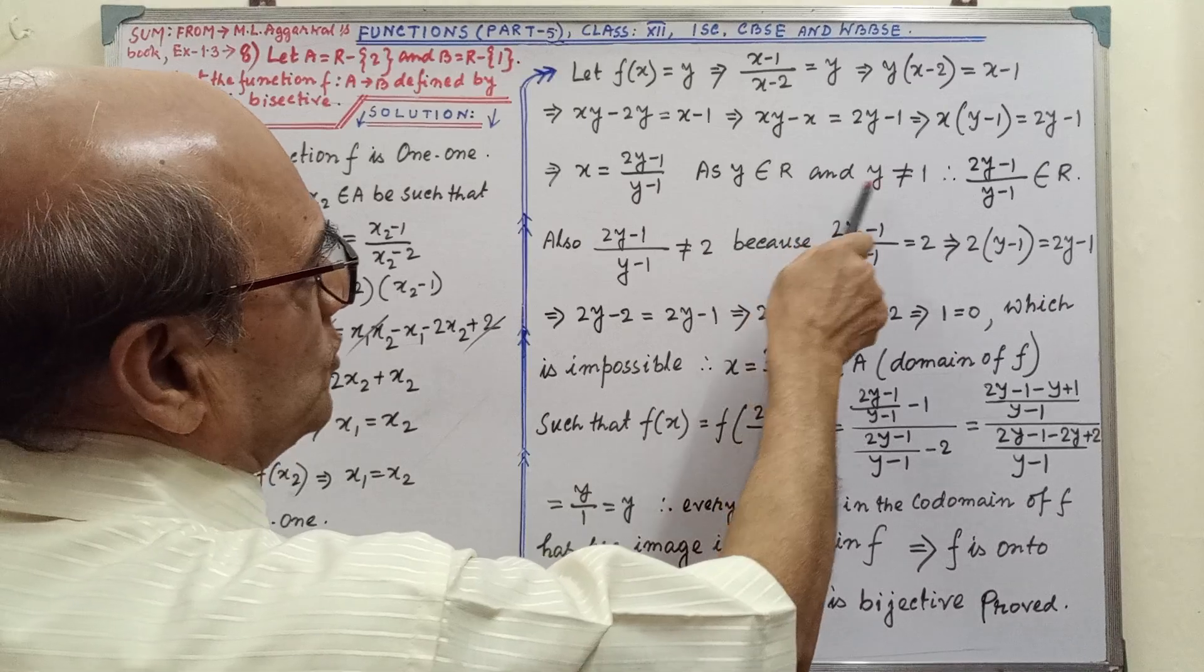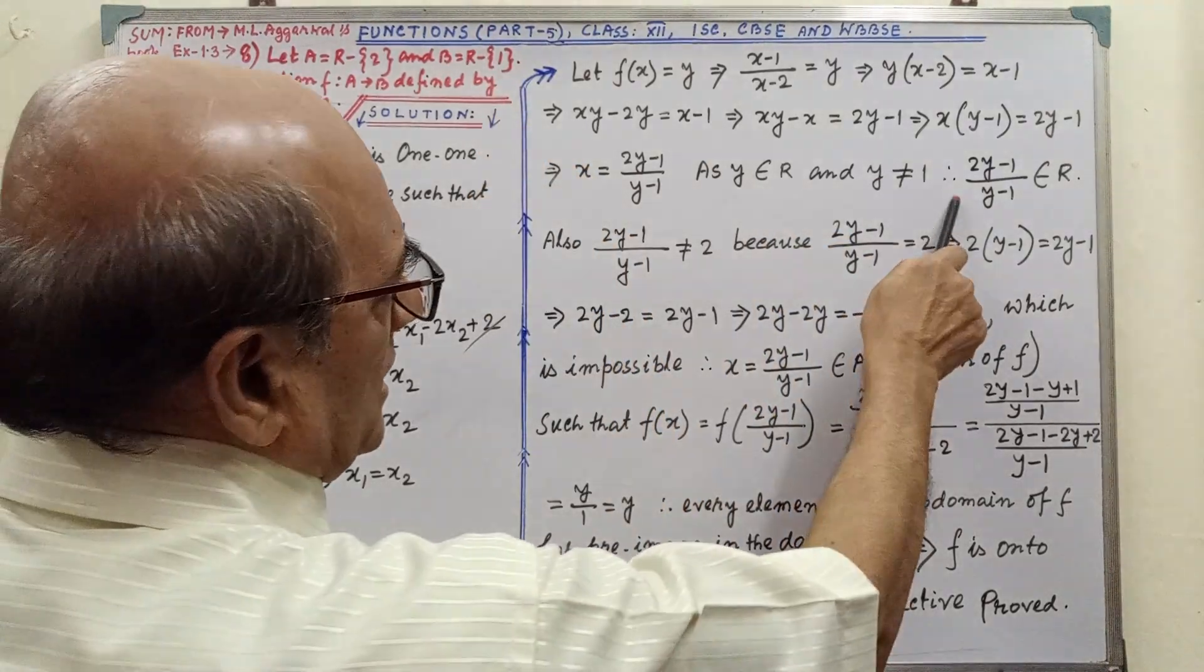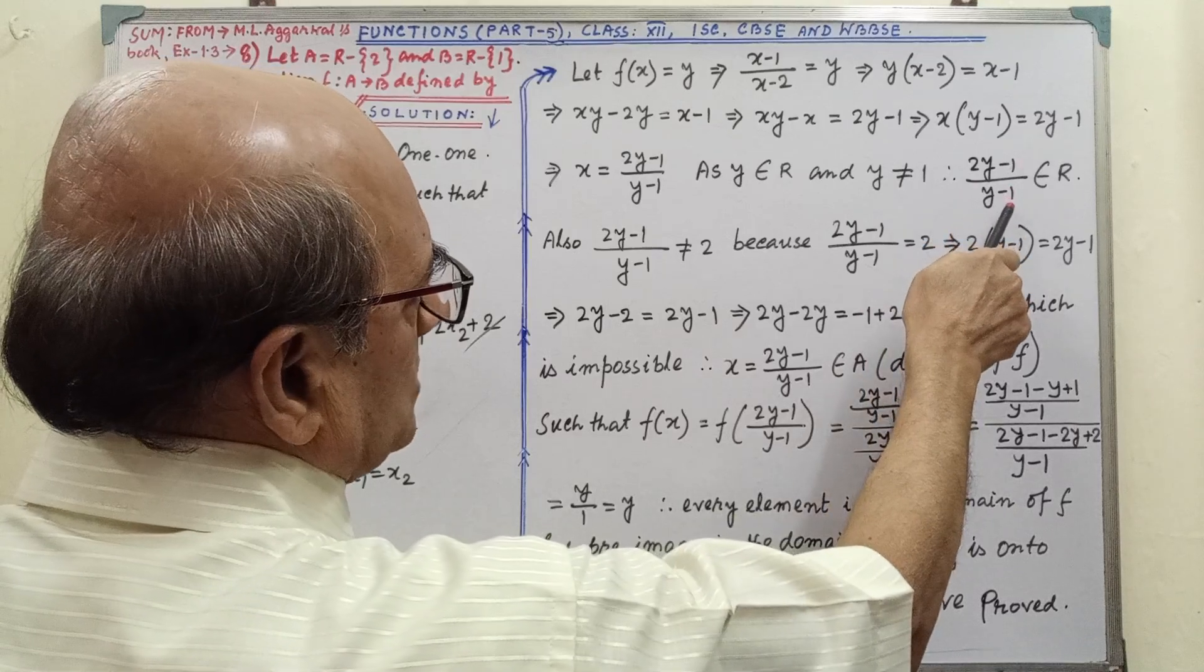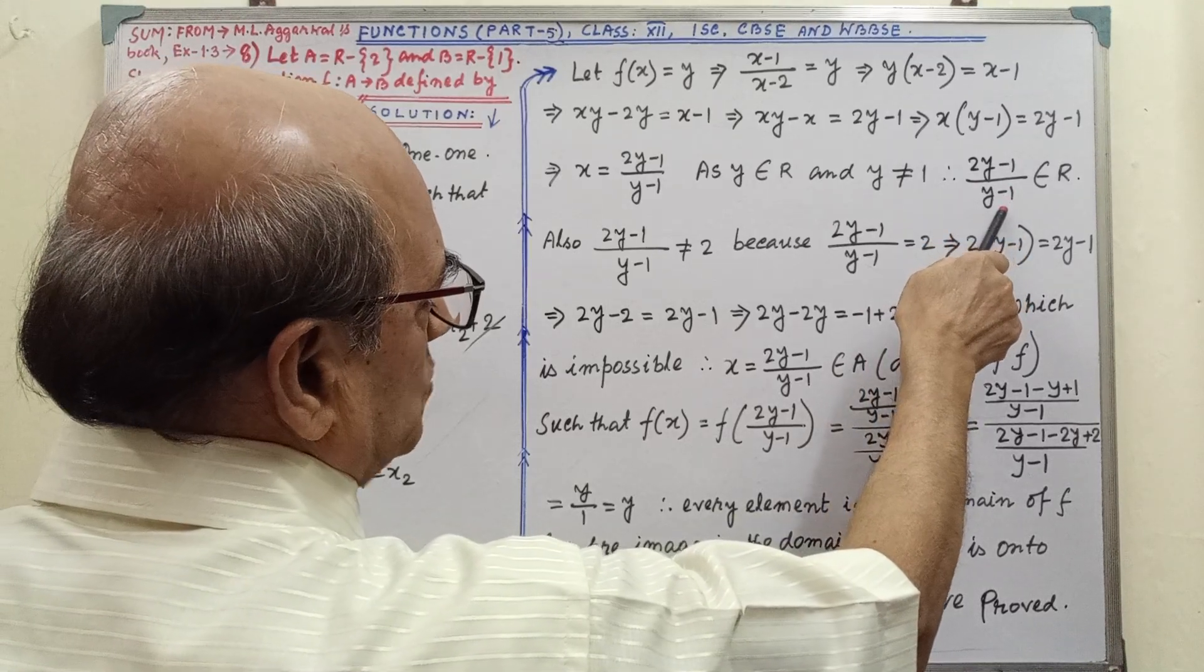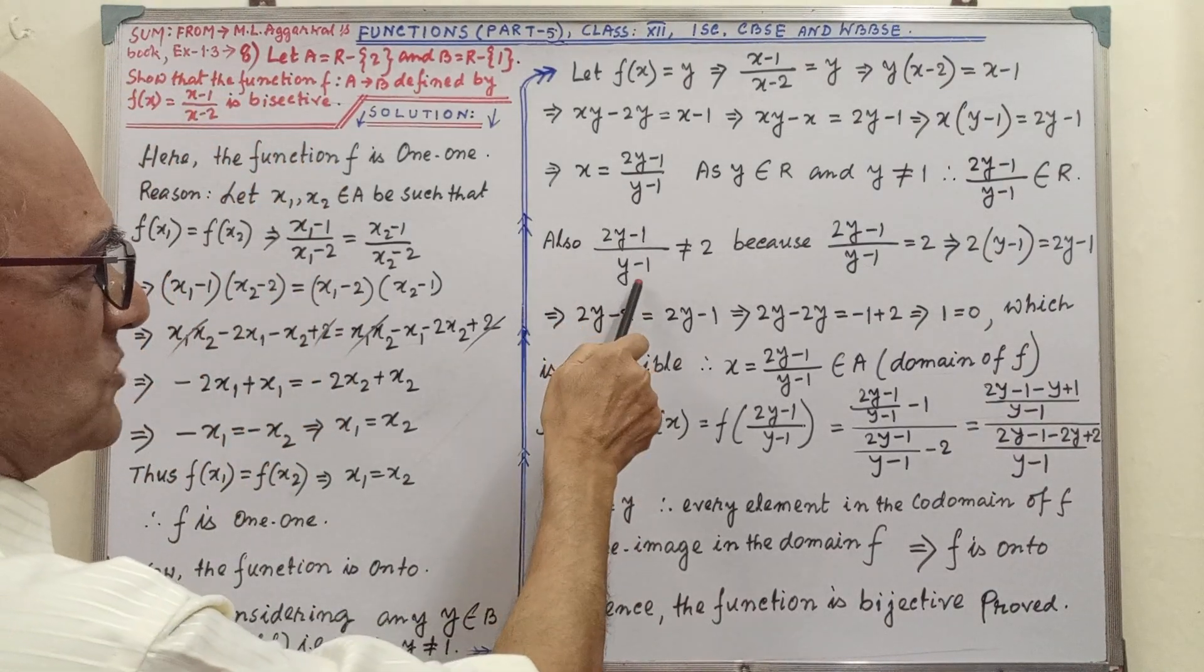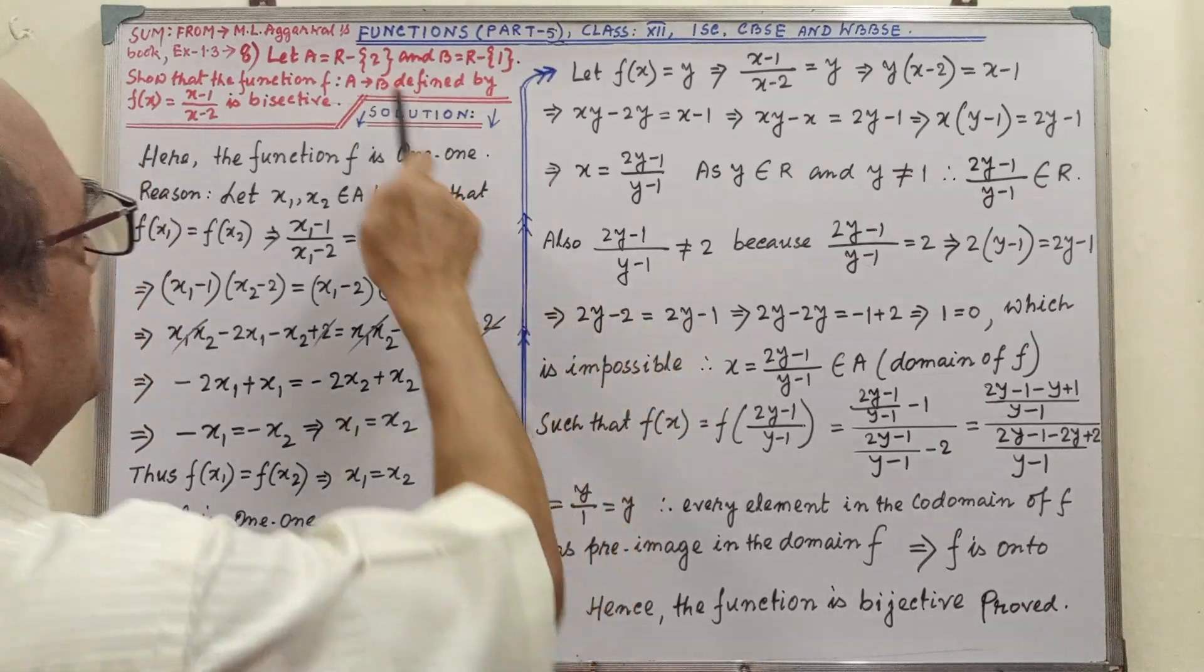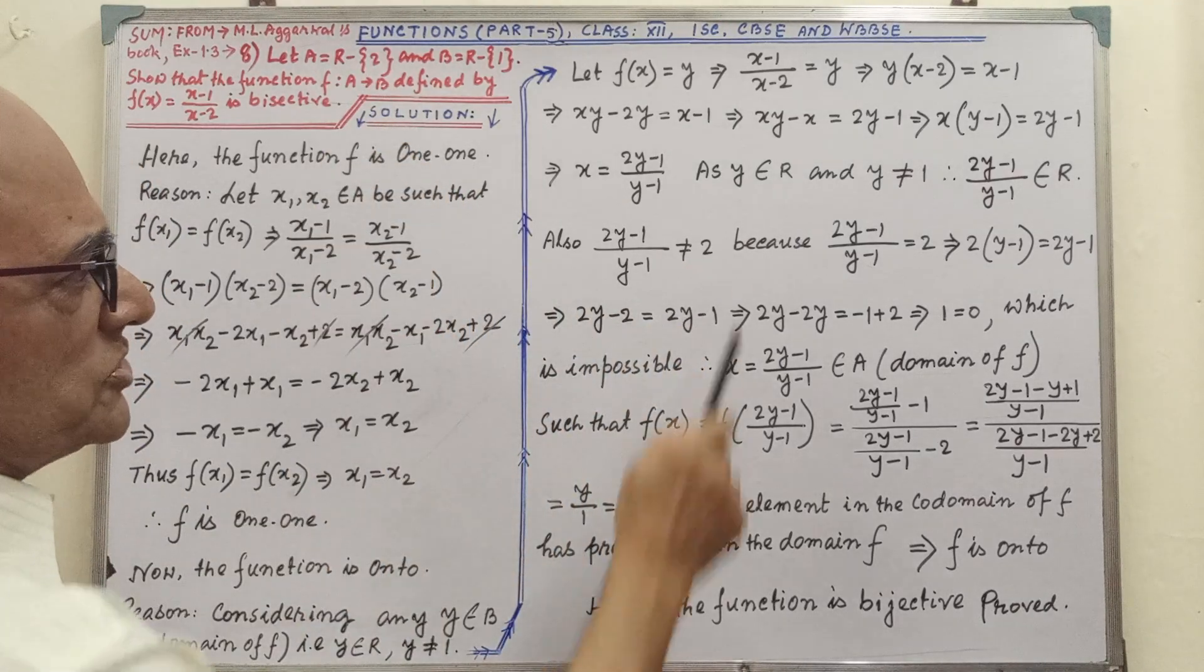Then X equal to 2Y minus 1 divided by Y minus 1 as Y belongs to R, that is real number. And Y not equal to 1, therefore 2Y minus 1 divided by Y minus 1 belongs to R. As 2Y minus 1 by Y minus 1, not equal to 2, because this is given,